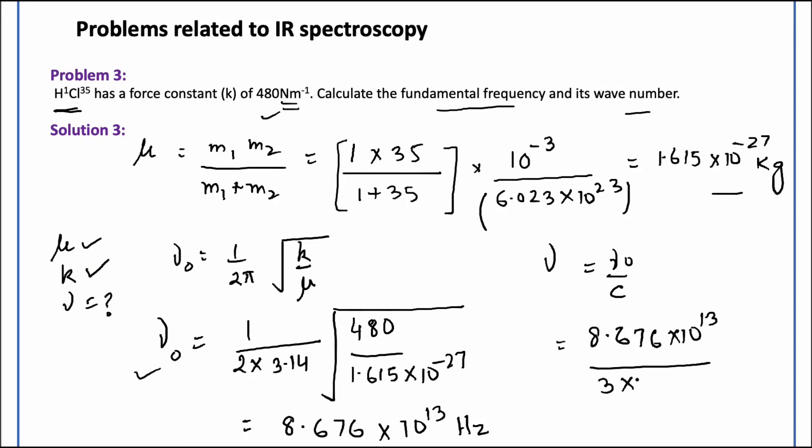The speed of light is 3 into 10 raised to the power of 8 meter per second. When I solve this I get 2.894 times 10 raised to the power 5 per meter. I need to convert it into centimeter inverse.